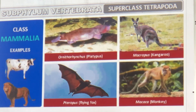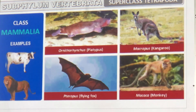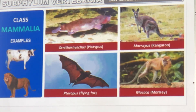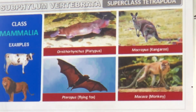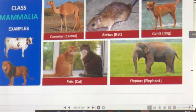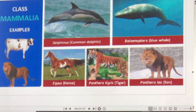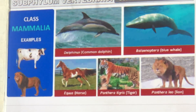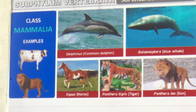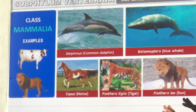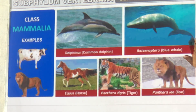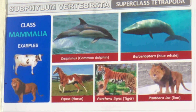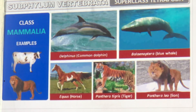Among mammals — four-limbed (tetrapods) — examples include Platypus, Kangaroo, Pteropus (bat), and monkeys. Aquatic mammals include Delphinus (dolphin), Balaenoptera (whale), Equus (horse), Panthera tigris (tiger), and Panthera leo (lion). All are mammals. Mammals are also found in water — don't forget that.